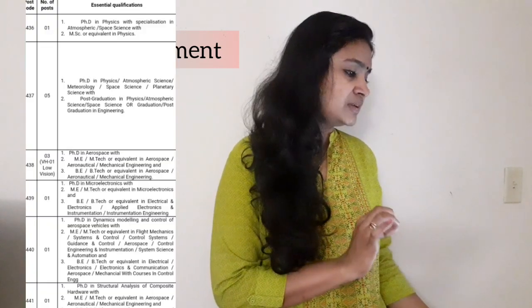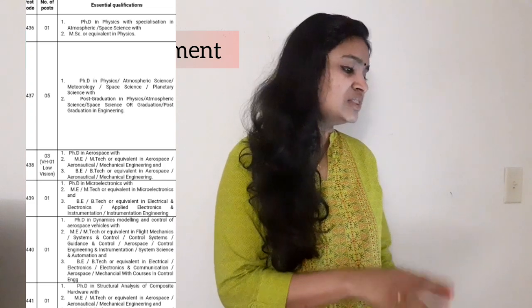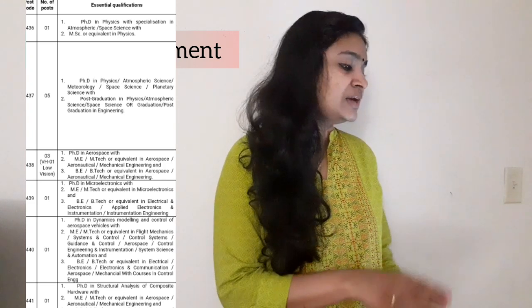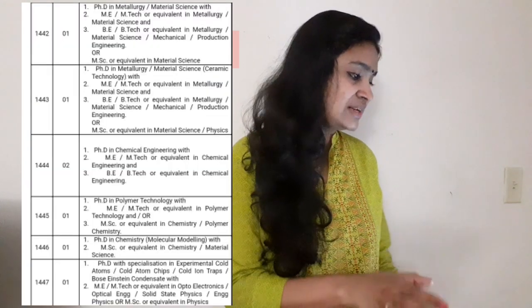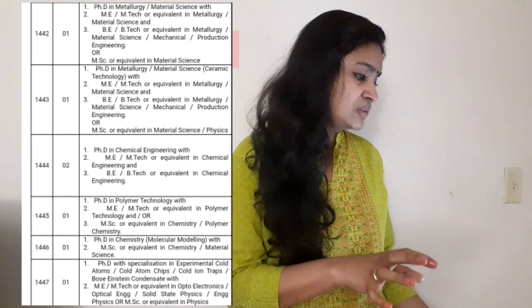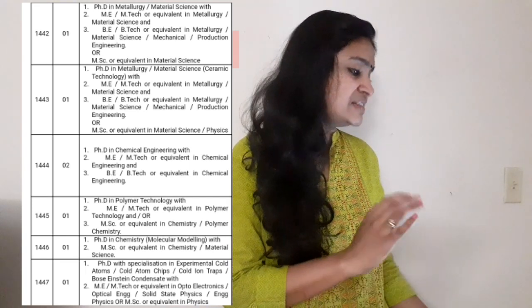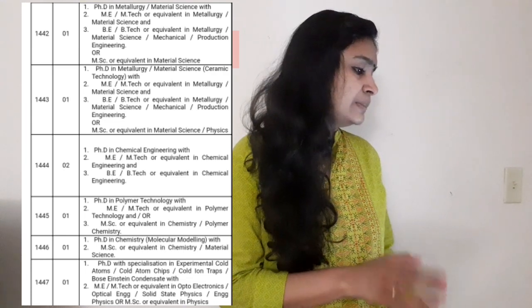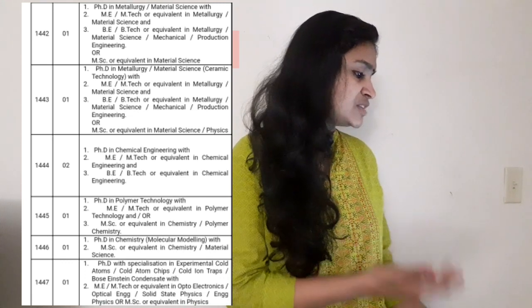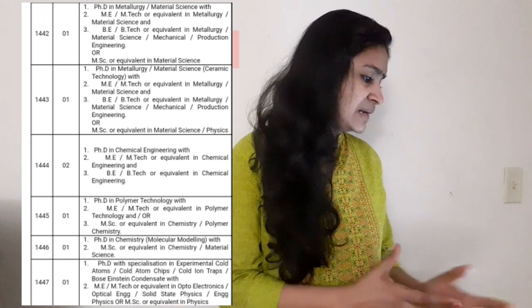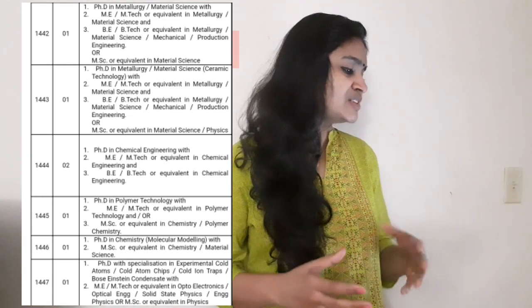For Scientist Engineer SD: the first category requires a PhD in Physics with MSc. The second is again PhD in Physics, then PhD in Aerospace, PhD in Micro Electronics, PhD in Structural Engineering (civil branch), PhD in Metallurgical or Material Science, PhD in Metallurgy again, PhD in Chemical or Polymer Chemistry, and PhD in Experimental Cold Atoms — which is a specified specialization. These are the various branches for Scientist Engineer SD recruitment.